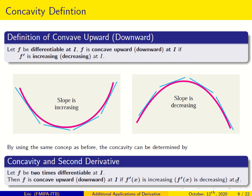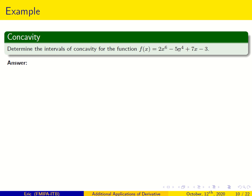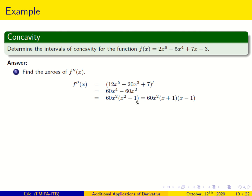Determine the interval of concavity for the function f(x). To do this, we find the zeros of f''(x). First, I find the first derivative of f(x), then the second derivative. The second derivative can be factored as 60x²(x² − 1), which further factors as 60x²(x + 1)(x − 1). So the zeros are x = 0, x = −1, and x = 1.